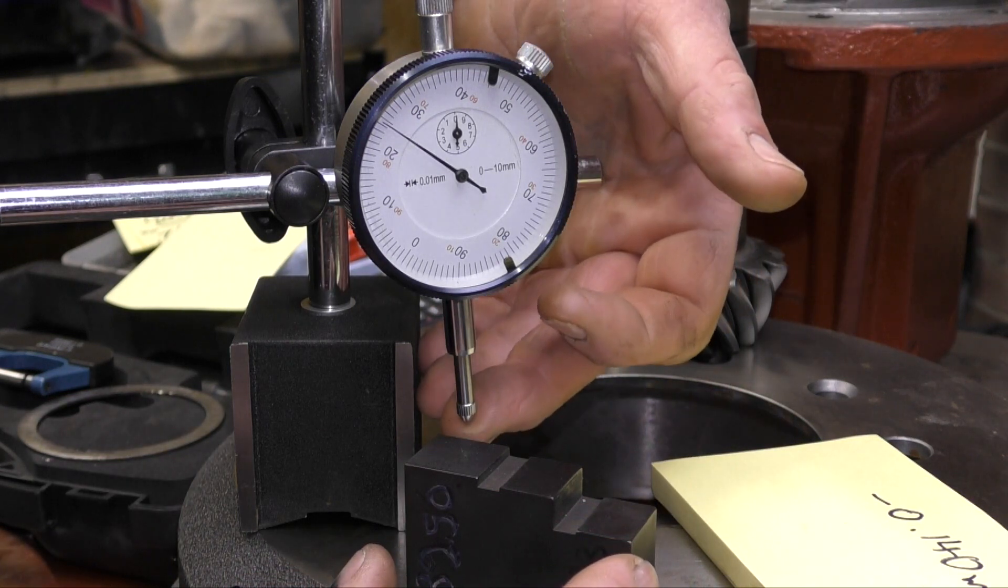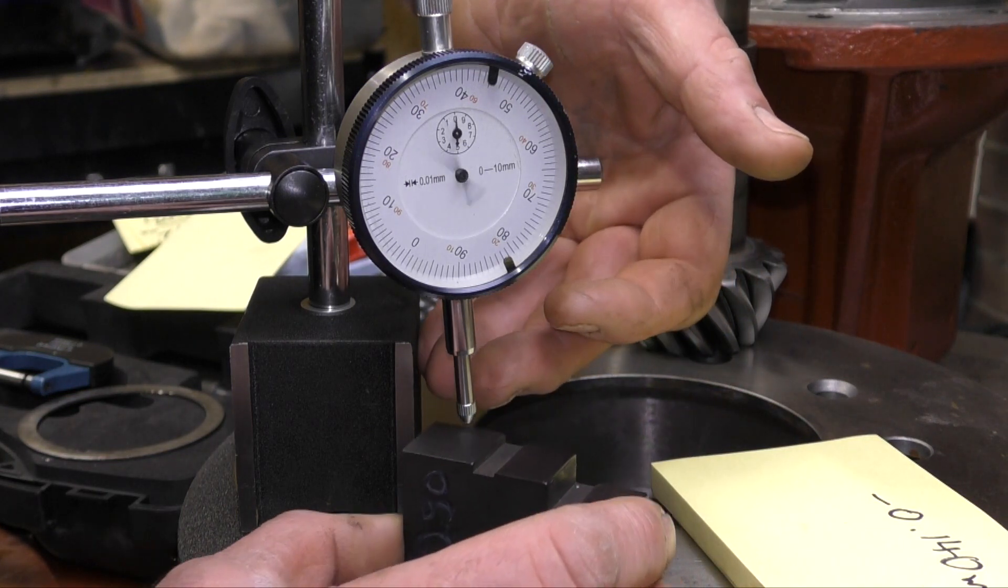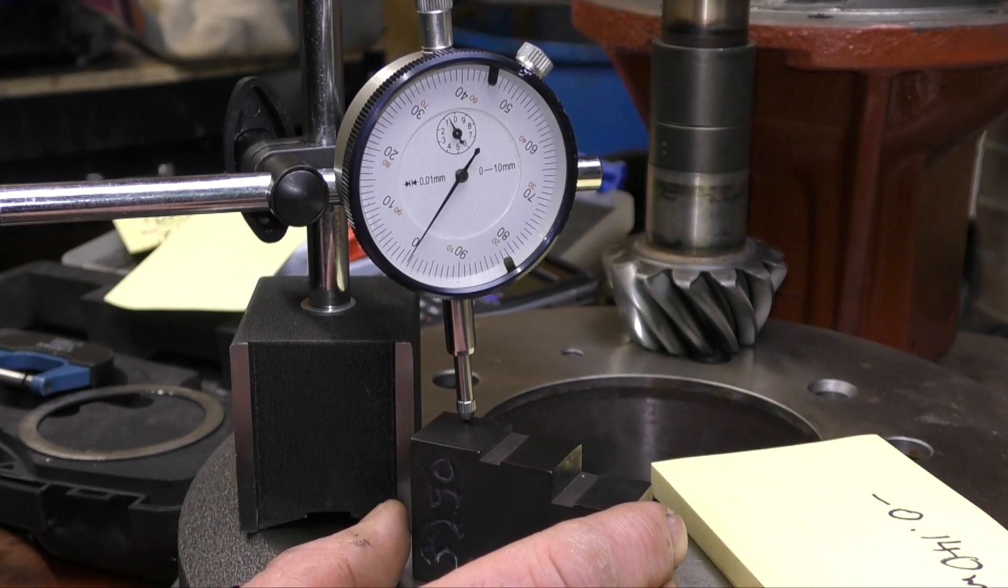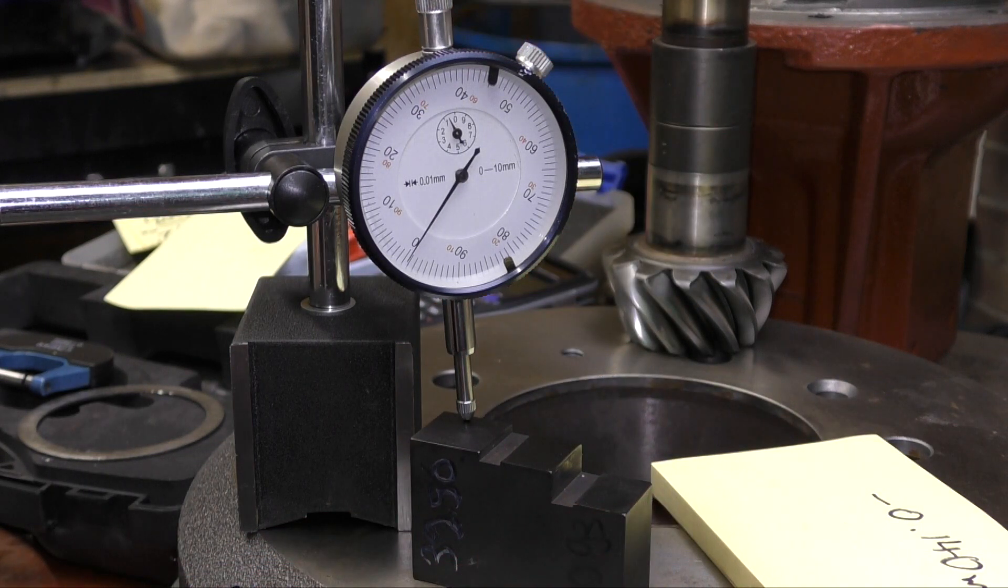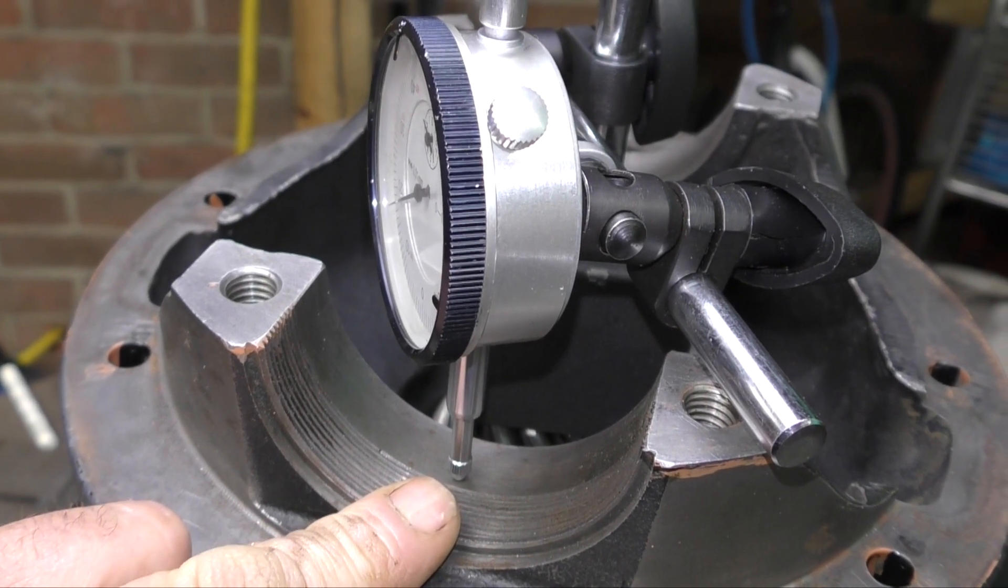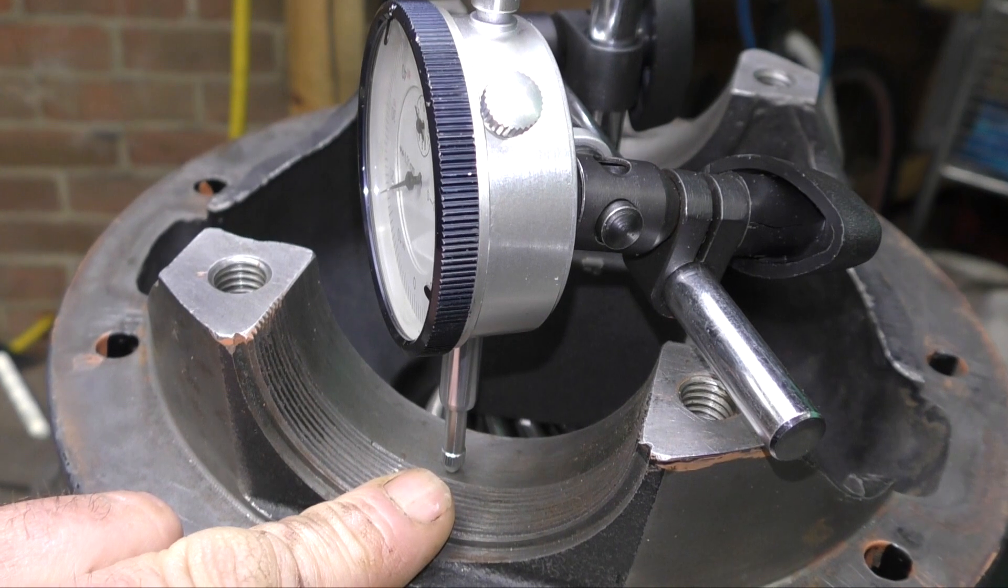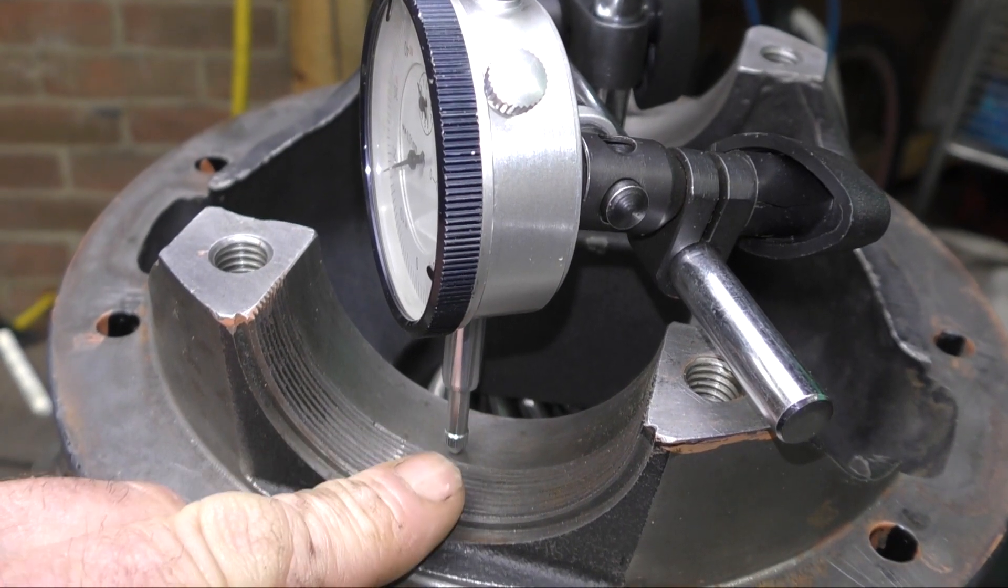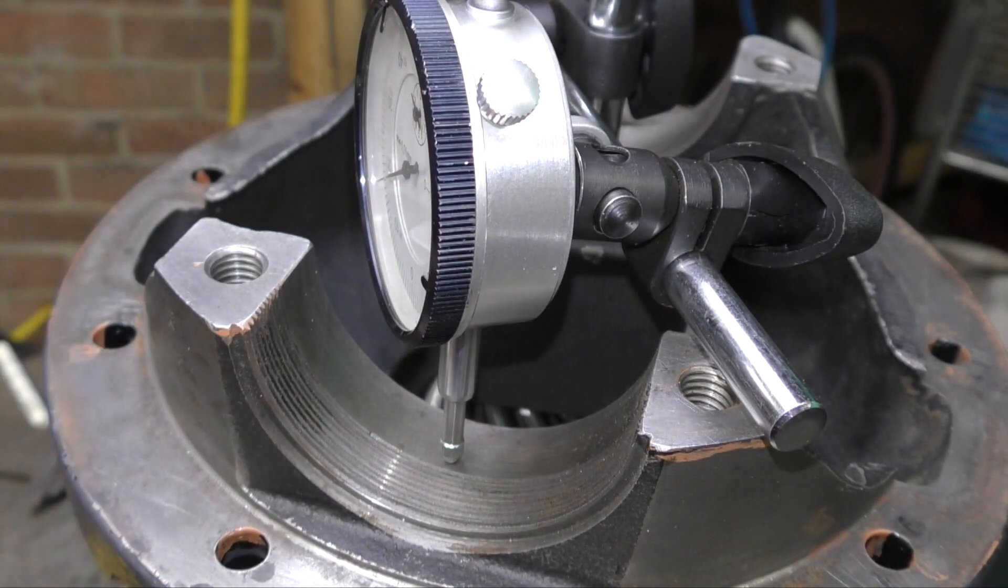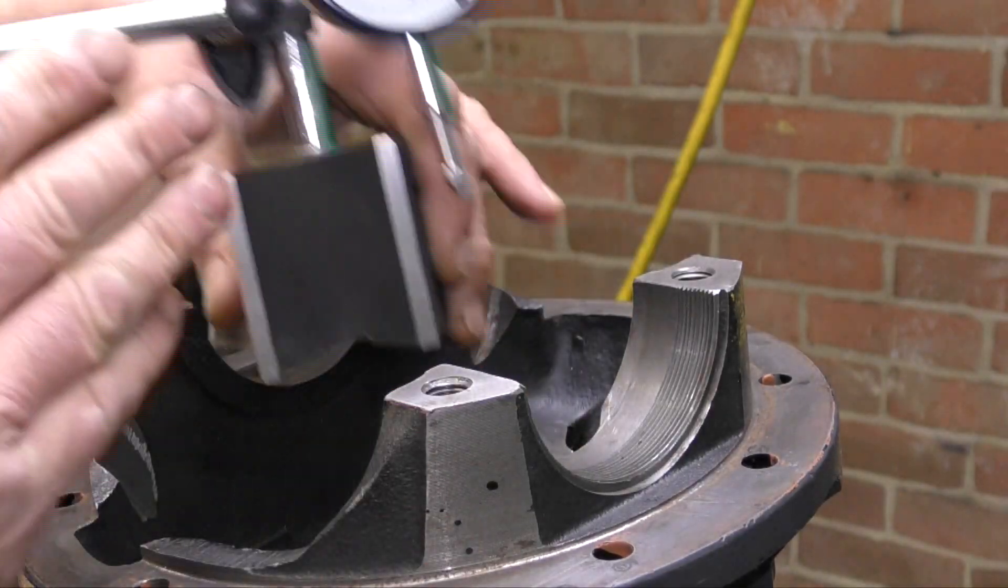The other thing is you want to put a preload on the dial gauge, so if the reading happens to be below zero, it will actually register. So it doesn't matter whether you put it 2mm or 1mm or whatever. Now you want to take the reading from here, the lowest point in the center of the bearing bore. That is really, really important.